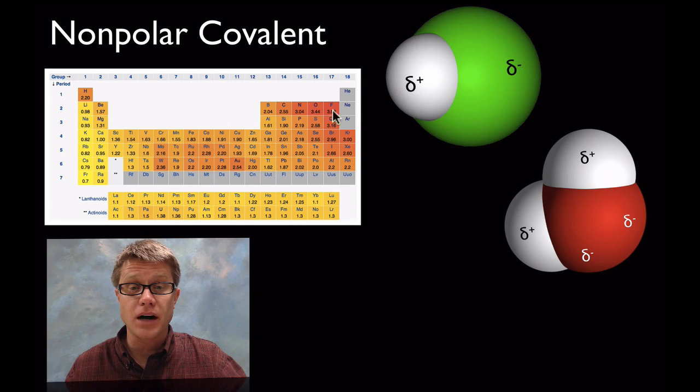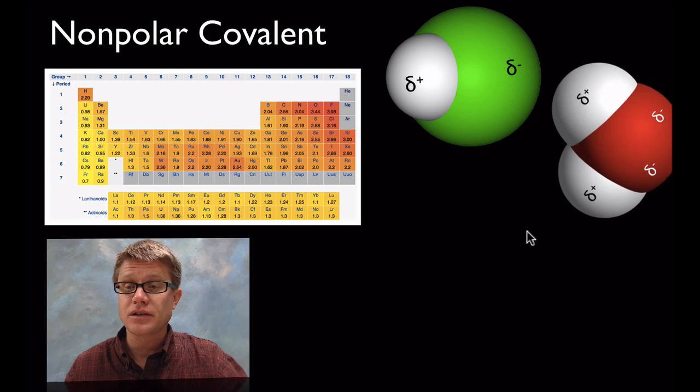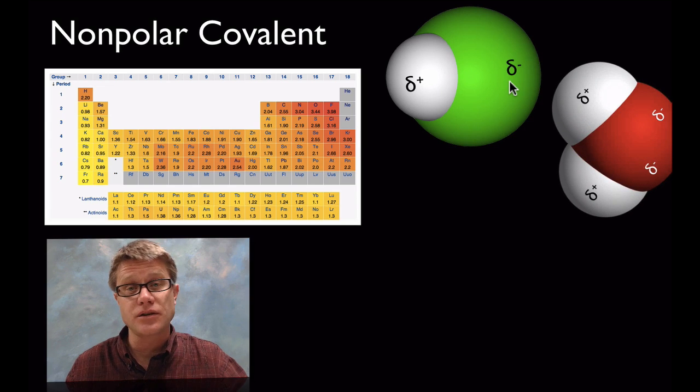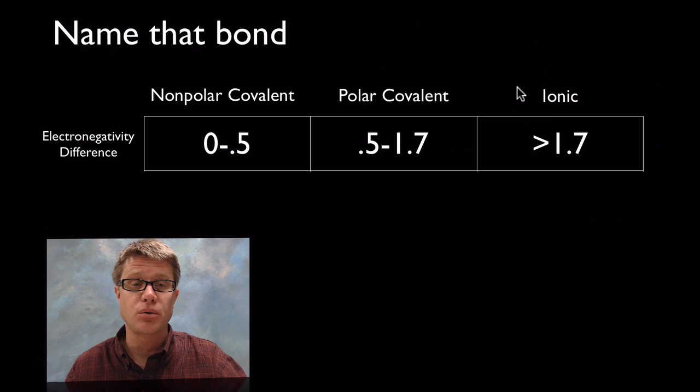Or if we look at water. Oxygen at 3.44, hydrogen at 2.20. So the oxygen is going to pull those electrons closer to it. You're going to have a partial negative charge here and then a positive charge out here. That really allows us to have water attracting the hydrochloric acid. There's going to be a dipolar charge and the connection between those two would be intermolecular at this point.